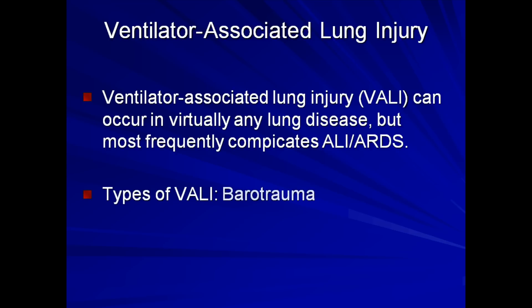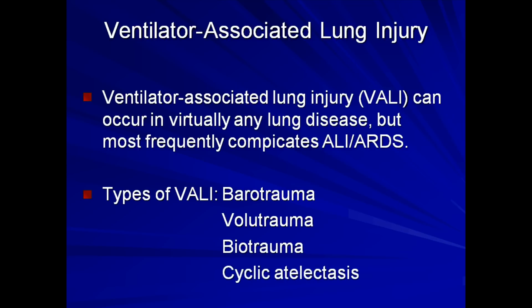First is barotrauma, which is a collection of pathologic processes caused by excessively high airway pressures, and which is the most obviously recognizable class of injury. The second class is volutrauma, in which damage to the lung occurs as a consequence of excessive tidal volumes and not from excessive airway pressures. Next is biotrauma, and finally cyclic atelectasis, occasionally referred to as atelectrauma, which refers to injury occurring as a consequence of alveoli continuously collapsing and re-expanding over and over again.